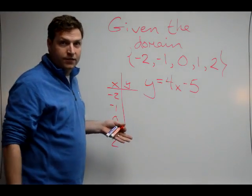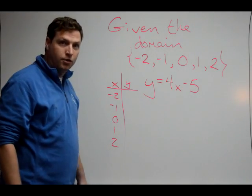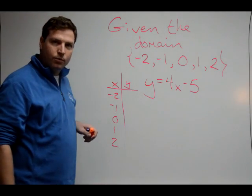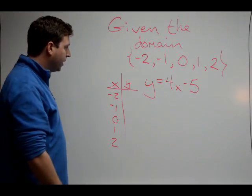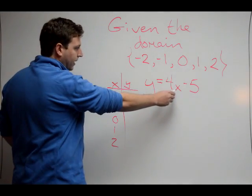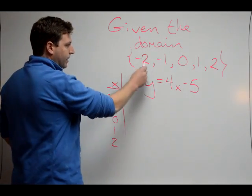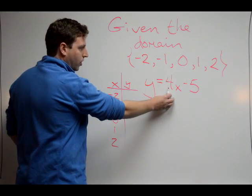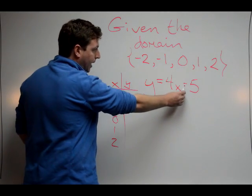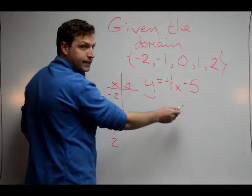We already know what our x values are. They're our input or their domain. Now we want to find what the range is. So we have our y over here, and we're going to plug these values in for x. So negative 2 times 4 is negative 8 minus 5 is negative 13.